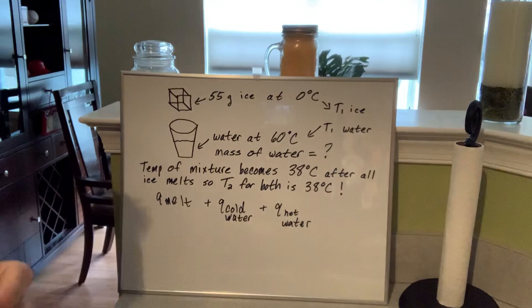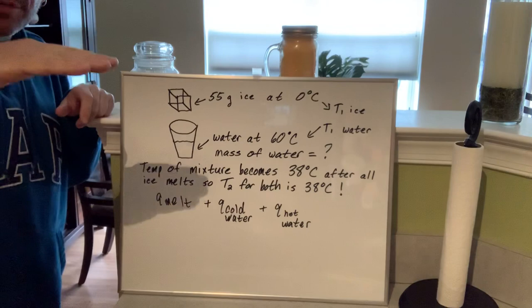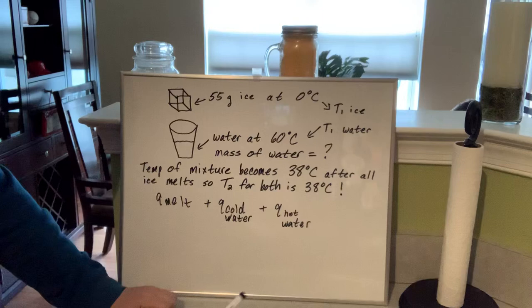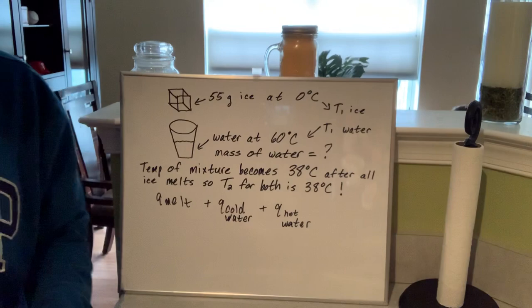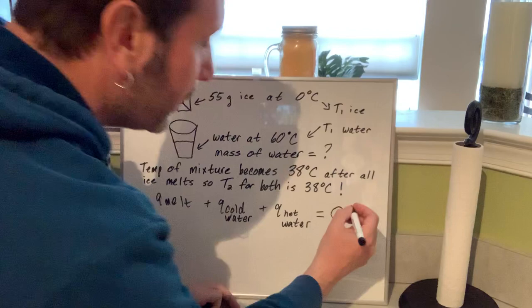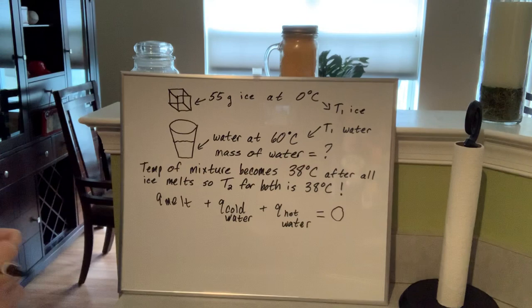All of the heat is being provided by the water that's in the cup. I dropped the ice in, the temperature of that warm water comes down, the cold water (which used to be ice) heats up, and they meet at 38 degrees Celsius. All the heat in this system is being provided by that hot water, so the overall heat transfer of everything has to add up to zero. When ice melts, the temperature doesn't change, so Q_melt is just mass times delta H of fusion.